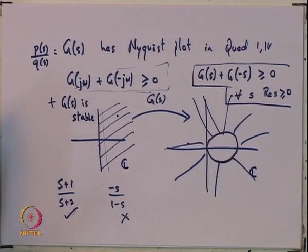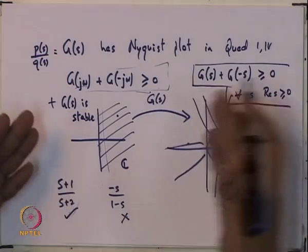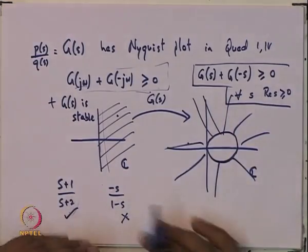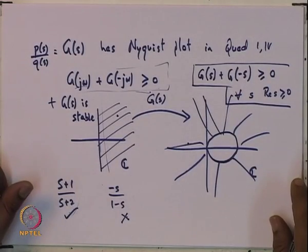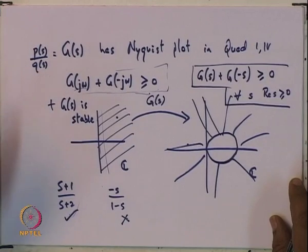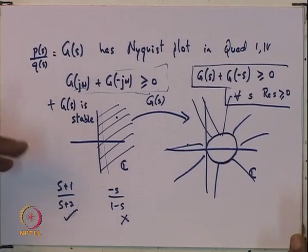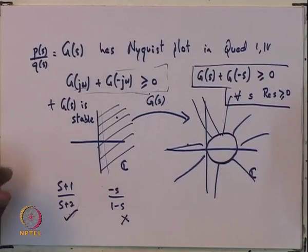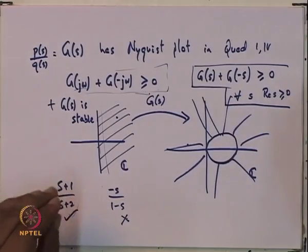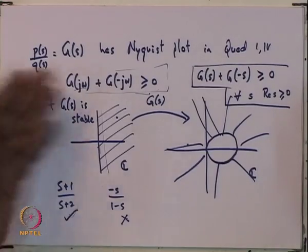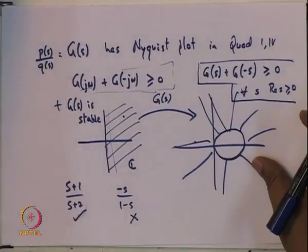The various books you go through might have some mixture of these definitions for positive realness. This is for the scalar single input single output case, and depending upon your taste you can adopt any one of them. They all roughly say the same thing but there are subtleties that need to be handled. Let me now give the definition for positive realness as far as matrices are concerned.